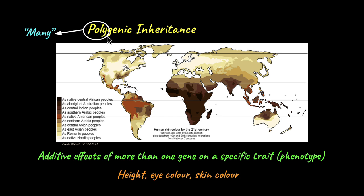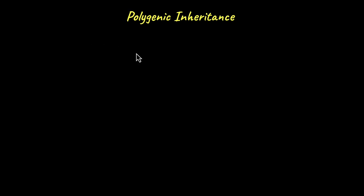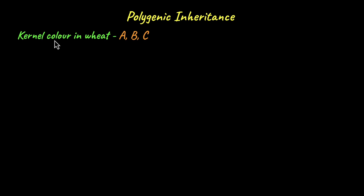Let us learn about polygenic inheritance in a little bit more detail with an example, and I will also explain what the additive effect means. Consider this trait in wheat — the kernel color. It is determined by three genes.